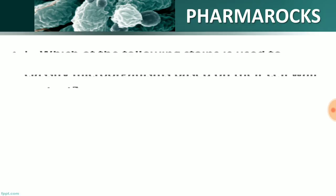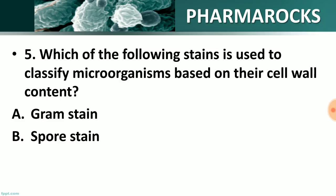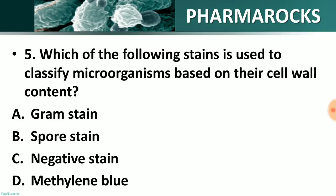Question number 5: Which of the following stains is used to classify microorganisms based on their cell wall content? Options: A) gram stain, B) spore stain, C) negative stain, D) methylene blue. The right answer is option A — gram stain. Gram stain is used to classify microorganisms based on their cell wall content.